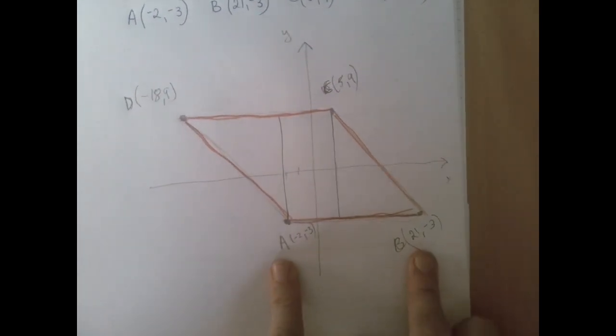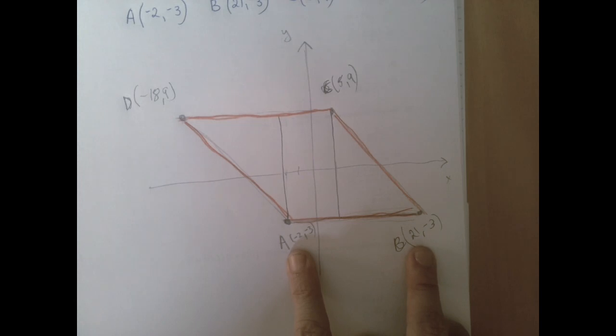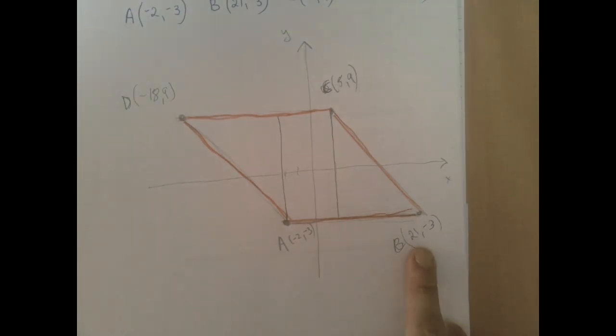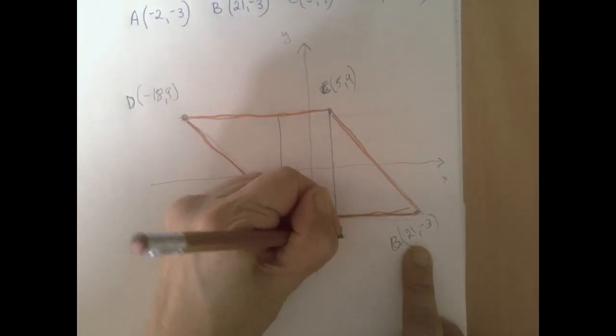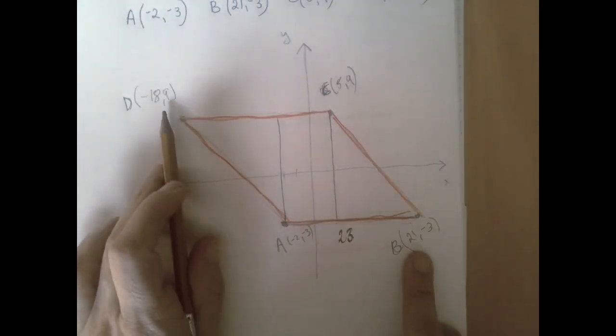The y-coordinate is the same, negative 3, and the x-coordinates go from negative 2 to 21. So that's, from negative 2 to 0 is 2, another 21. So there are all kinds of ways to see that the horizontal side is 23 units long, and that should be the case up here.